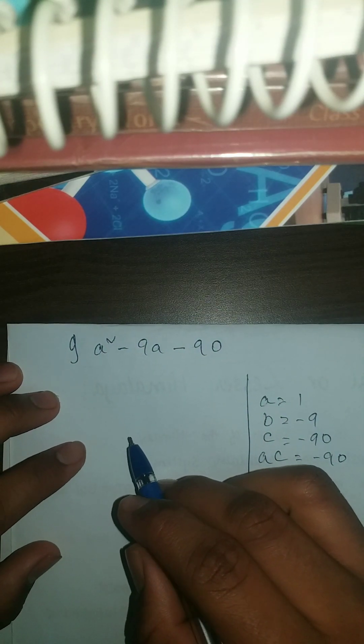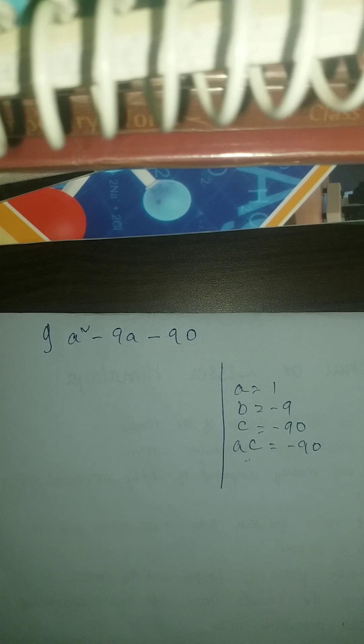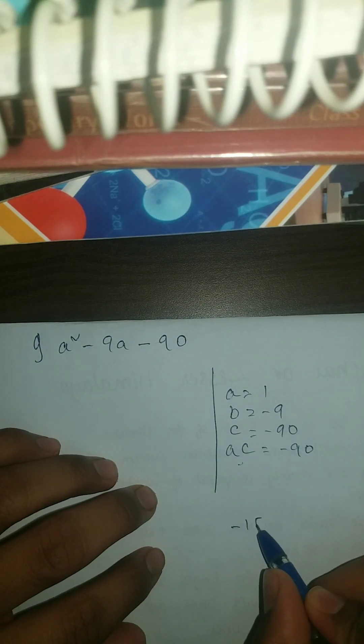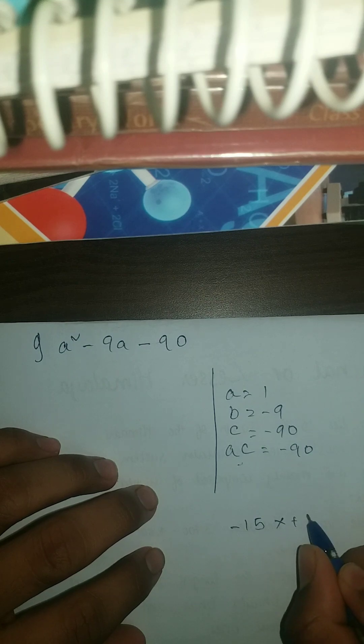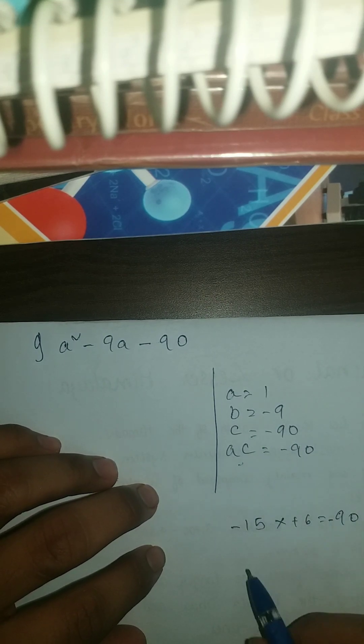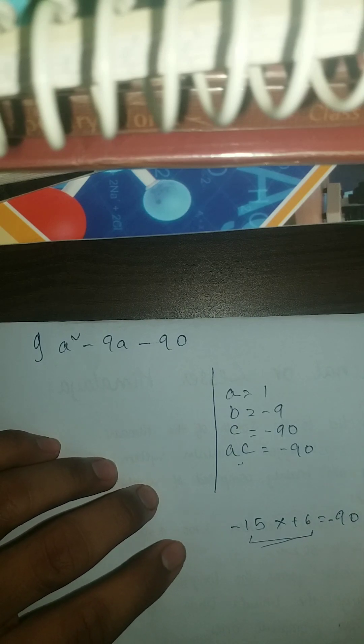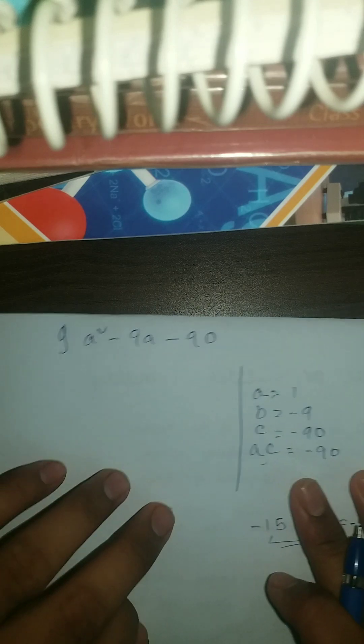So now here we need two numbers. If we multiply them, we will get ac, and if we add or subtract them we're gonna get b. So here in my mind, if we do minus 15, minus 15 into plus 6, so we're gonna get minus 90.